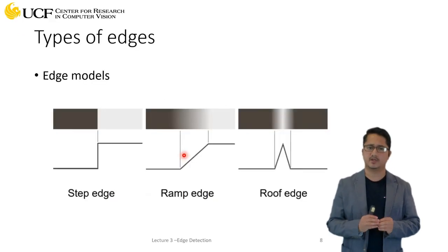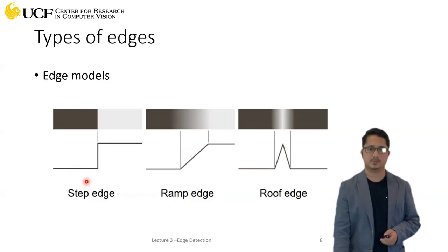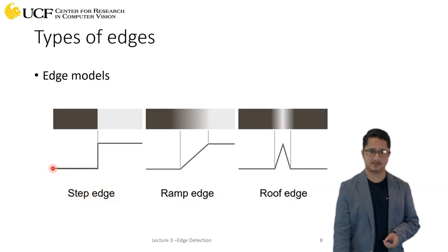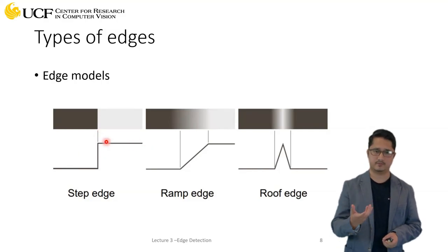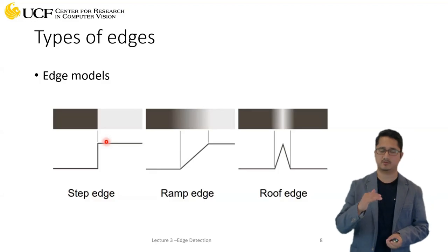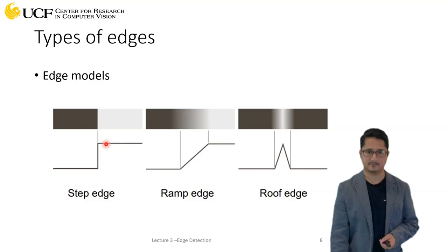Now let's understand how we can model edges. The first type is a step edge: pixel color remains at a continuous value and then suddenly jumps to another value and stays there — exactly like a step function.